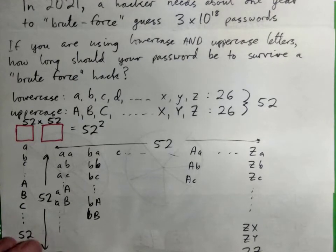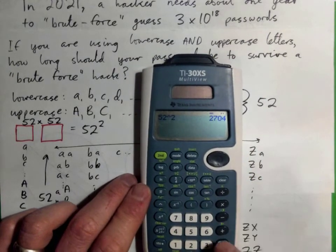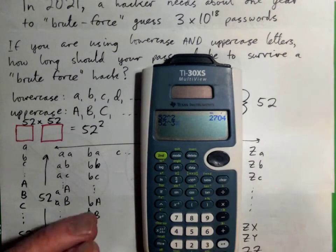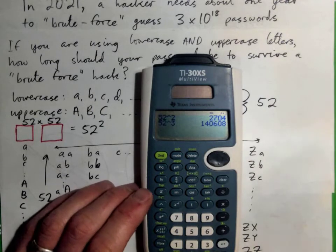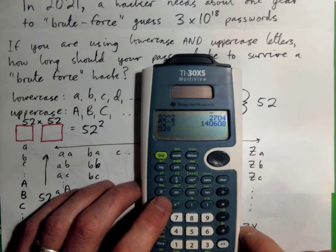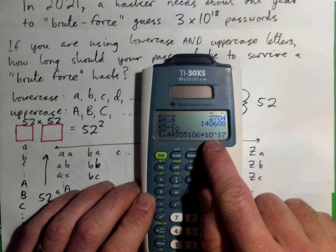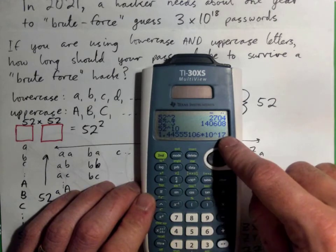So all I'm asking you to do is play with the calculator and just guess. So 52 to the power of 3, that would be like three letters long, upper or lower case. That's 140,000 combinations and so on. Let me try 52 to the power of 10. Oh, now we're getting close. That's about 1.4 times 10 to the power of 17.